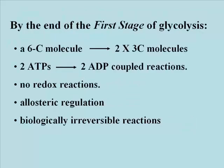Let's summarize the first stage of glycolysis. A six-carbon carbohydrate has been split into two three-carbon carbohydrates. A total of two ATPs have been consumed. There have been no redox reactions so far — remember that the first of them occurs in the second stage of glycolysis. And we've seen two allosterically regulated enzymes, both of which also happen to be biologically irreversible.